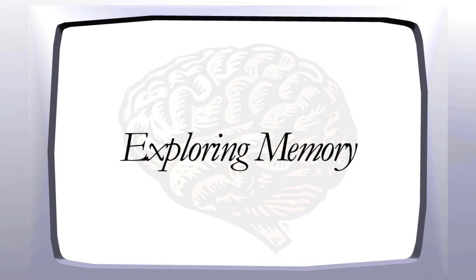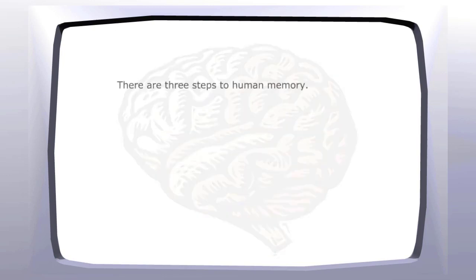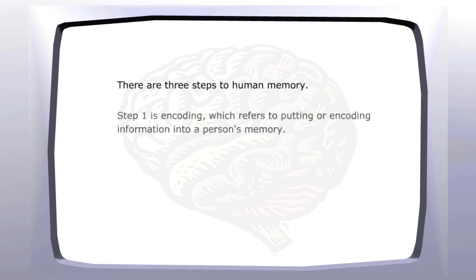Exploring Memory. There are three steps to human memory. Step 1 is encoding, which refers to putting or encoding information into a person's memory.